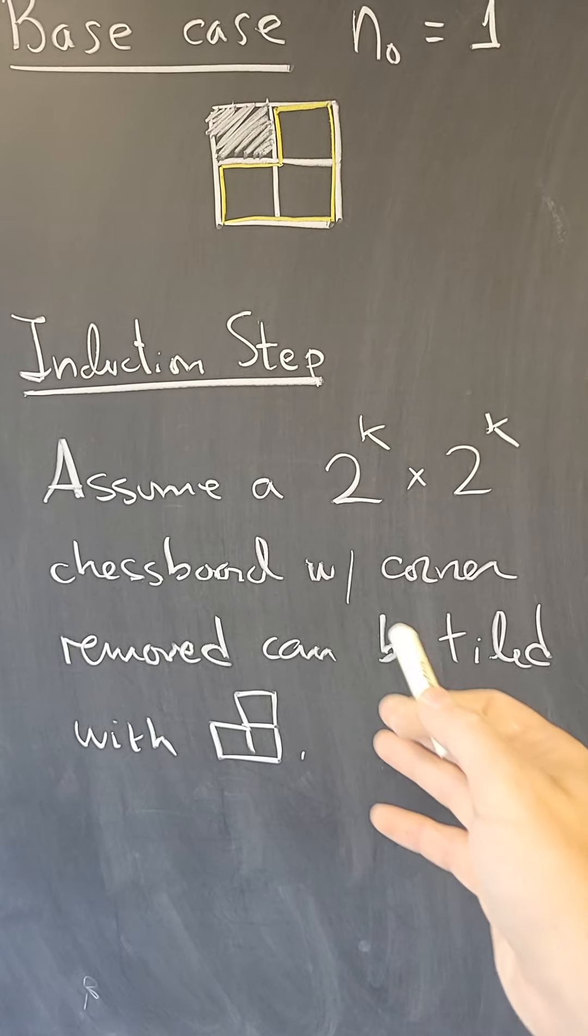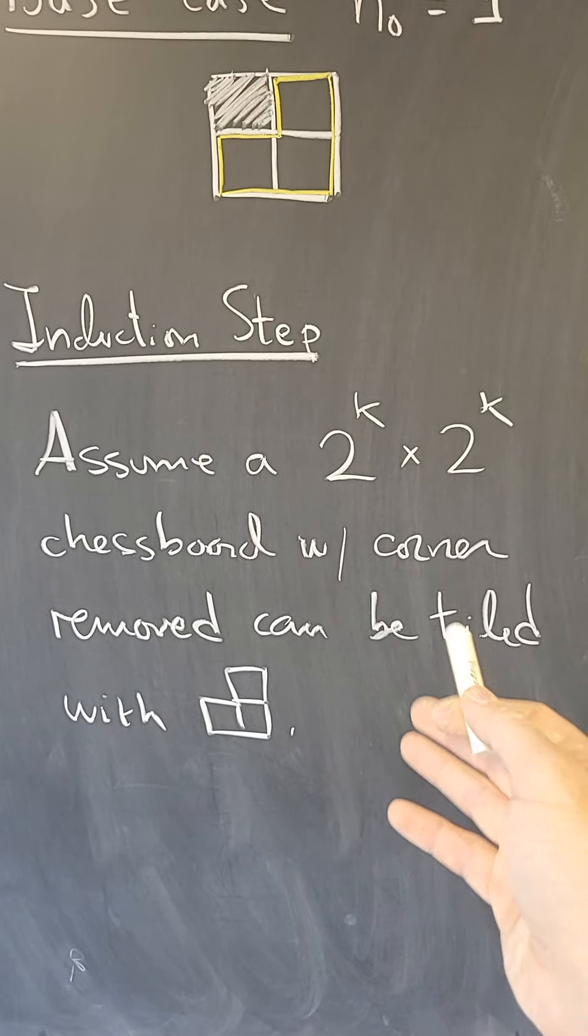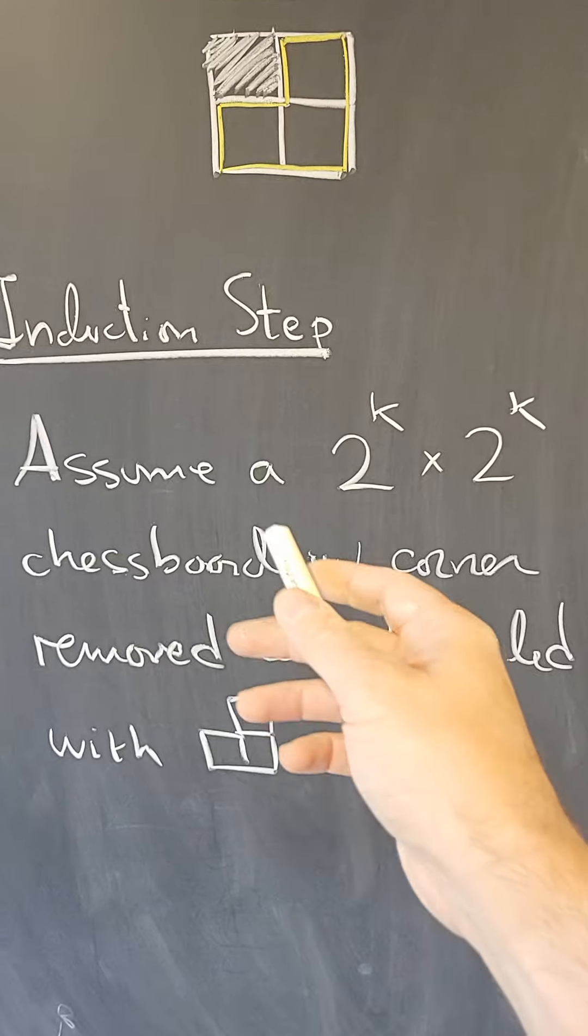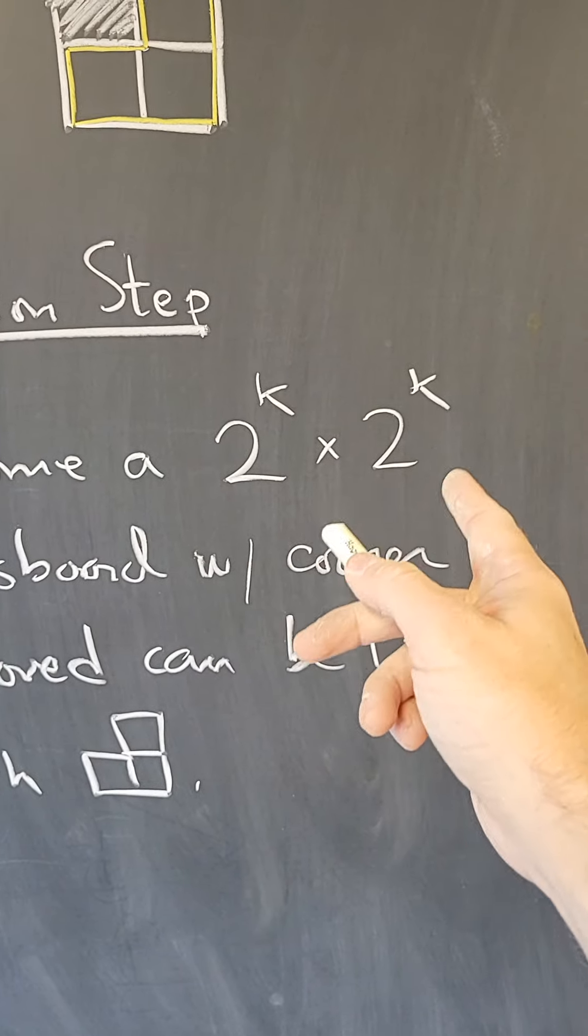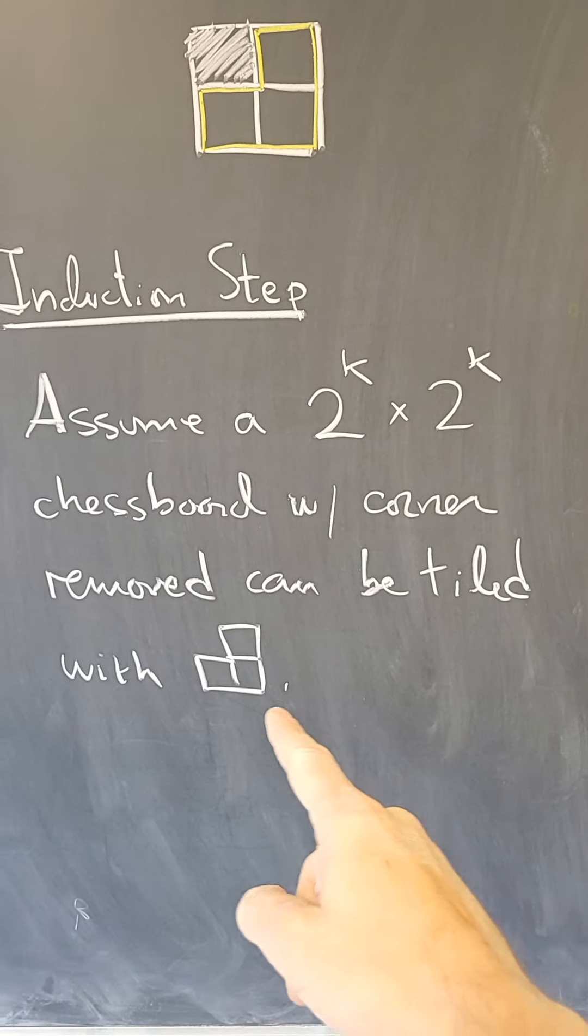Now, to prove the induction step, we're going to prove that the kth case implies the k plus one case. And for that, we're going to assume what we call the induction hypothesis: that a 2 to the k by 2 to the k chessboard with one corner removed can be tiled with pieces of that sort.